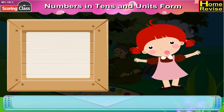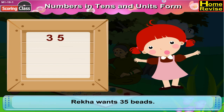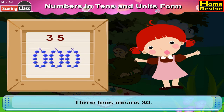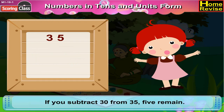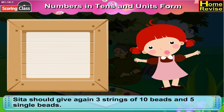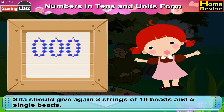Now it is Rekha's turn. Rekha wants 35 beads. You know that 3 tenths means 30. So, if you subtract 30 from 35, 5 remains. So, Sita should give 3 strings of 10 beads and 5 single beads.